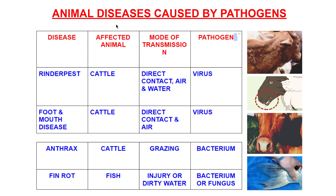Pathogens are responsible for animal diseases as well. The first animal disease is rinderpest — you can see spotty, swollen structures on the skin of cattle. It spreads through direct contact, air, and water and is a viral disease. Another viral disease found in cattle is foot and mouth disease, which produces sores on the mouth and on the foot. Its mode of transmission is direct contact or air.